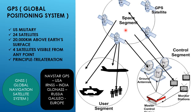GPS is a global navigation satellite system (GNSS). Many countries have their own systems: the USA has NAV STAR GPS, India has IRNSS, Russia has GLONASS, and Europe has Galileo. GPS was originally developed for military purposes and was made public in 1980. At least four satellites must be visible to determine a position at a given point.